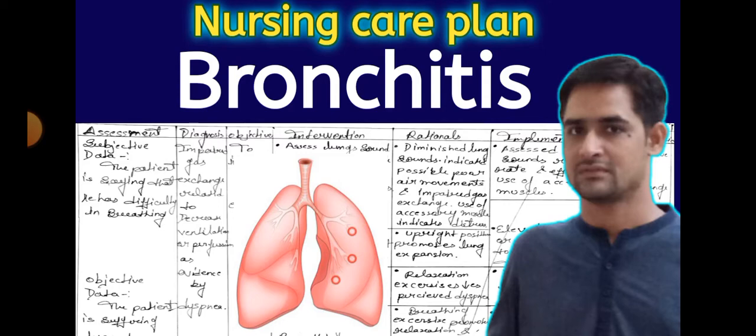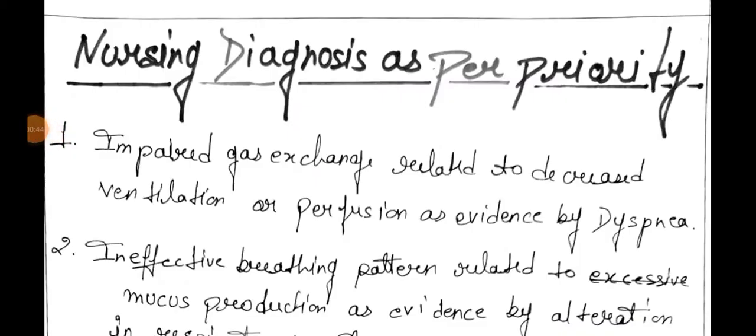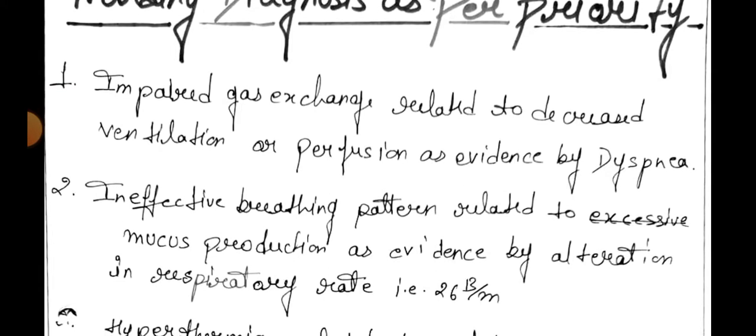Now let's look at the nursing care plan on bronchitis disease. The nursing care plan on bronchitis, as per priority based. First: impaired gas exchange related to decreased ventilation or perfusion as evidenced by dyspnea. This is our first diagnosis.